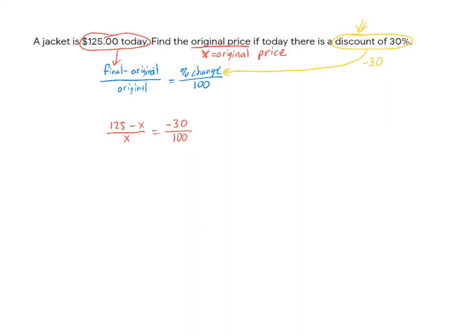And here I can just solve. It's a proportion, so cross multiply. That's why we're doing percent change now, because it's a good application of a proportion. We have 125 minus X times 100. Most of you are getting in the habit of putting that 100 first, which is lovely. It doesn't really matter. And then we have X times negative 30, so that's negative 30X. Now we can solve.